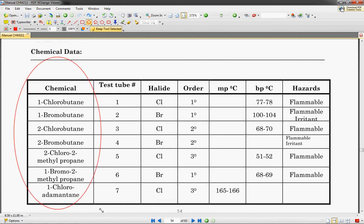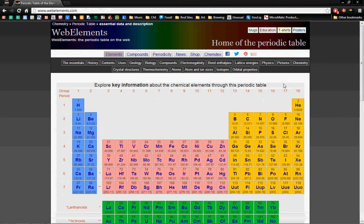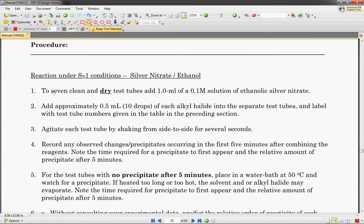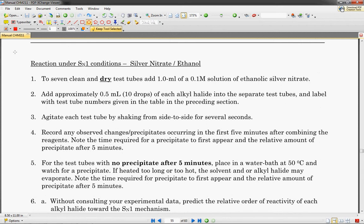We're going to have seven halogen compounds that we're going to be using. Halogen just means this row right here, number nine. So fluorine, chlorine, bromine, iodine, and so on.